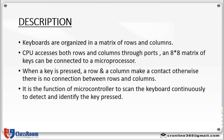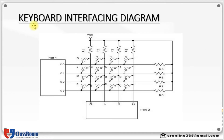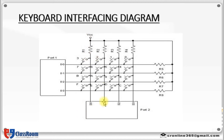Let us see the interfacing diagram of the keyboard. Here you can see keys are connected by means of rows and columns. Port 1 acts as the output port, to which rows D0 to D3 are connected. Port 2 acts as the input port, to which columns are connected. Keys range from 0 to 9 as well as from A to F.